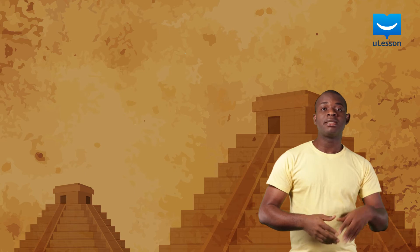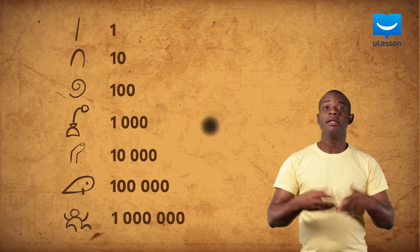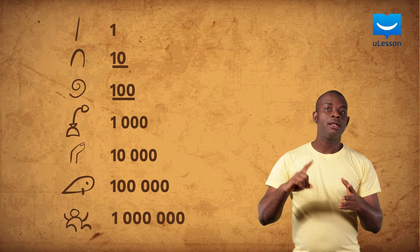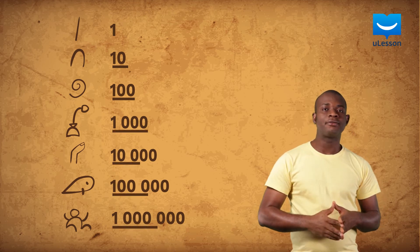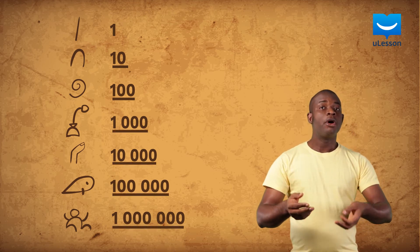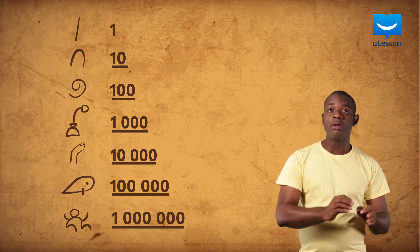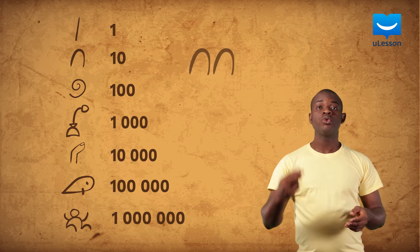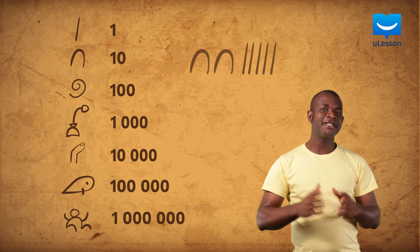The Egyptians counted in multiples of 10, such as 10, 100, 1000, and so on. So, if a boy wanted to count and record 25 balls, he would group them into two tens and a five using symbols.